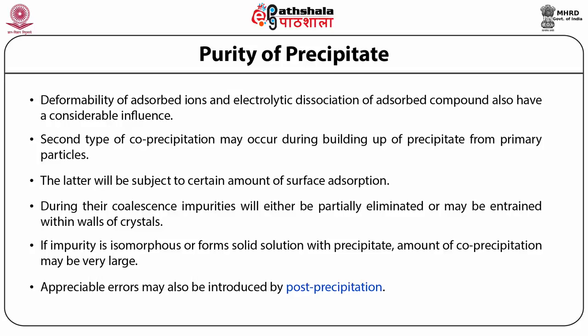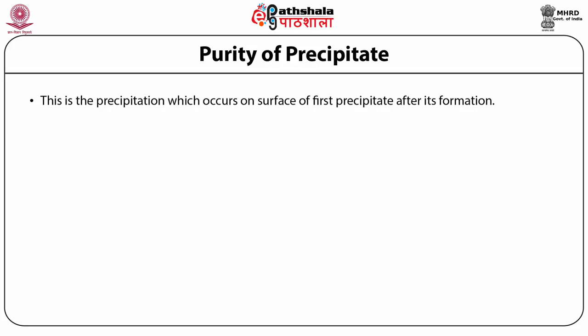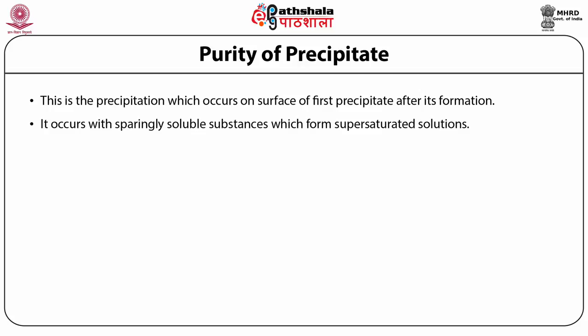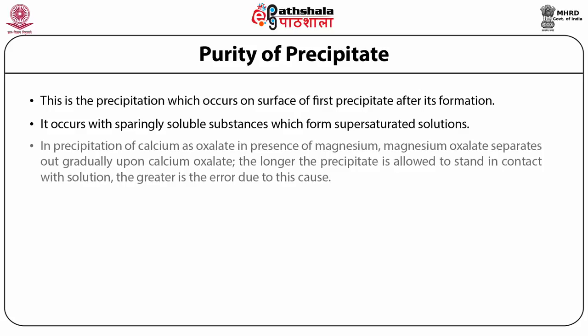Appreciable errors may also be introduced by post-precipitation. Post-precipitation is precipitation that occurs on the surface of the first precipitate after its formation. It occurs with sparingly soluble substances that form supersaturated solutions, usually having an ion in common with the primary precipitate. For example, in the precipitation of calcium as oxalate in the presence of magnesium, magnesium oxalate separates out gradually upon the calcium oxalate. A similar effect is observed in the precipitation of copper or mercury sulfide, where zinc sulfide is slowly post-precipitated.